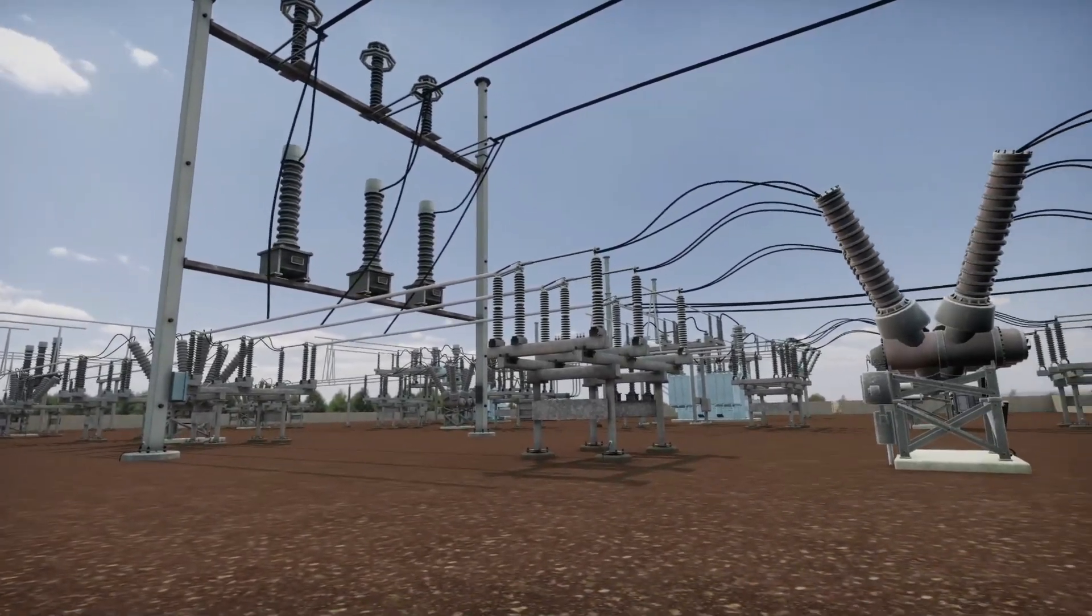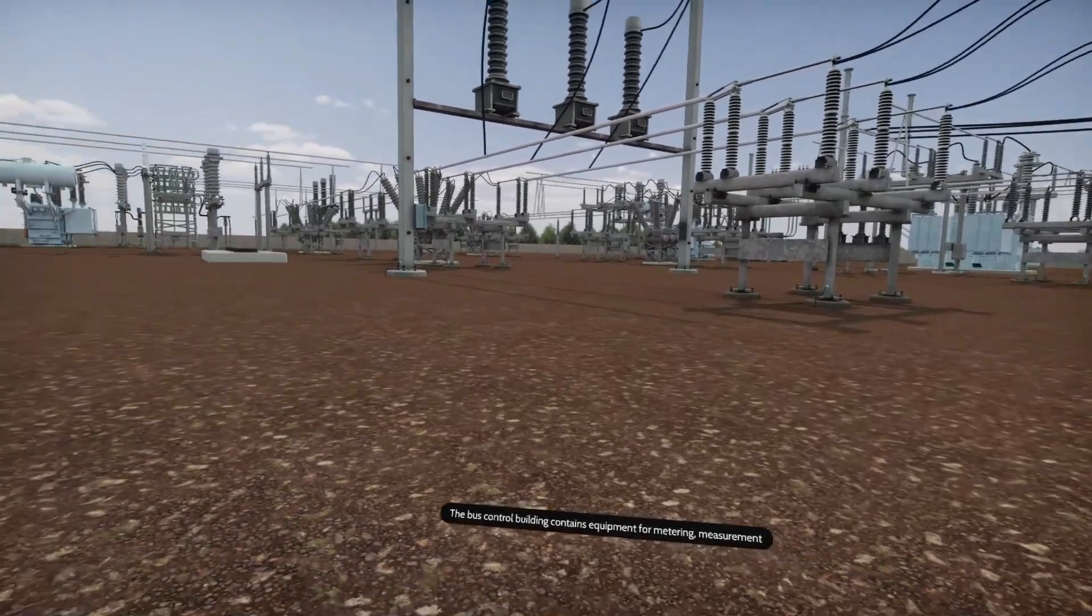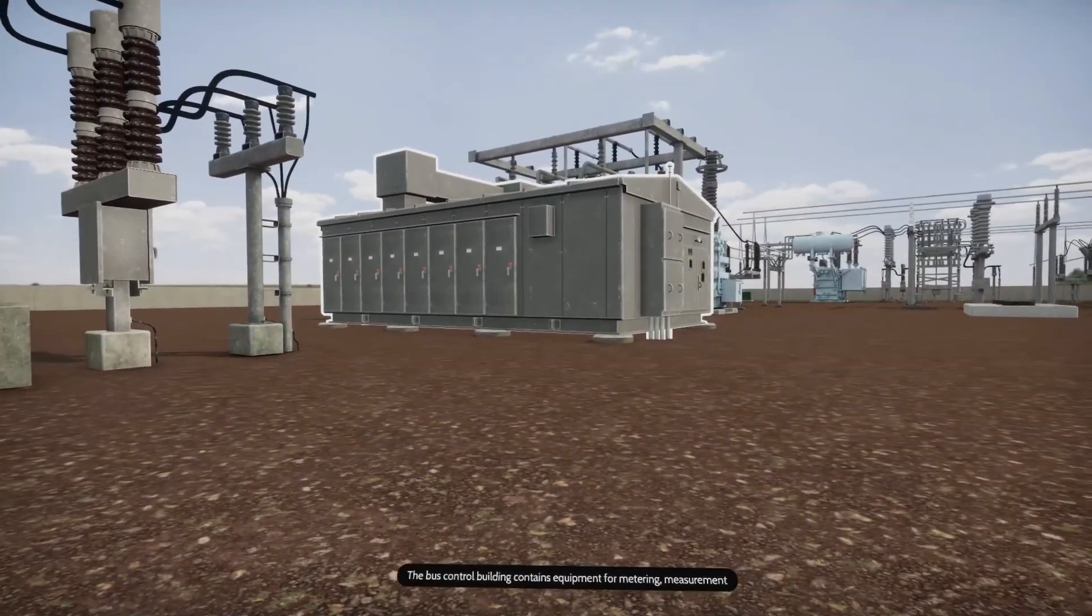The bus control building contains equipment for metering, measurement of voltage and current, and communications via telephone.